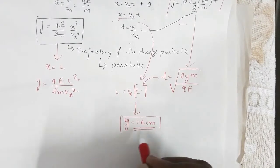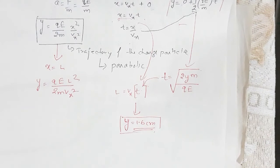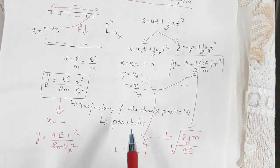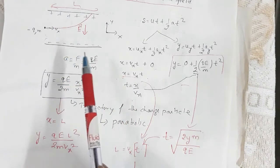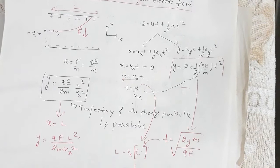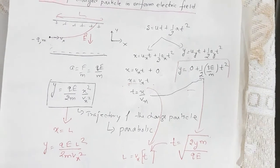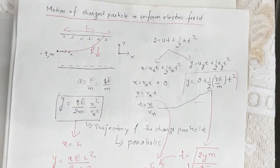You might observe that the motion of a charged particle in an electric field is essentially identical to the motion of a particle in a gravitational field. This is the basic concept of motion of a charged particle in a uniform electric field.